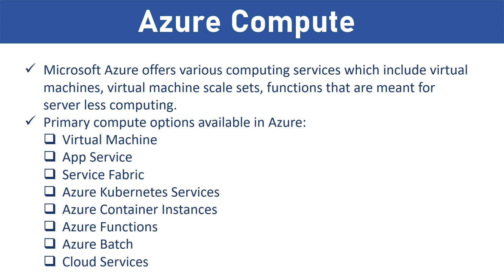The main compute options in Azure are: Virtual Machine — an IaaS service allowing deployment and management of VMs inside a Virtual Network (VNet). App Service — a managed PaaS offering for hosting web apps, mobile app backends, RESTful APIs, or automated business processes. Service Fabric — a platform that can run on any environment including Azure or on-premises. Azure Kubernetes Services — manages a hosted Kubernetes service for running containerized applications. Azure Container Instances — the fastest and simplest way to run a container in Azure. Azure Functions — a managed FaaS service. Azure Batch — a managed service for large-scale parallel and high-performance computing. Cloud Services — a managed service for running cloud applications.